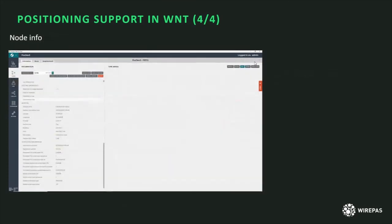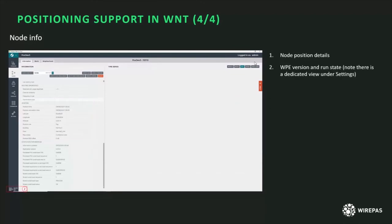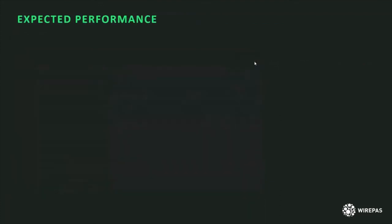The node info view shows detailed position information: latitude, longitude, building, floor, and area ID for that particular tag. In the lower left corner you can see the WPE version running, and if the WPE has stopped for any reason that line will be shown in red. Under Settings there is also a dedicated view showing the WPE service running status.